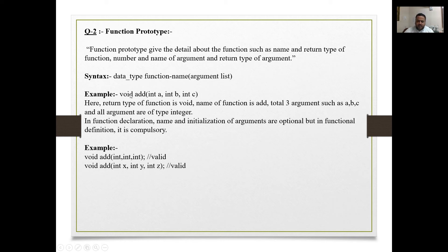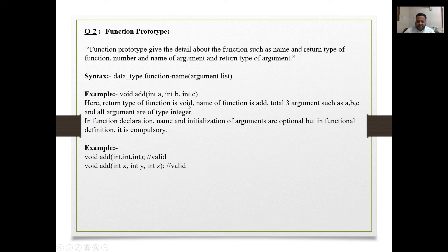The syntax is: data type, then function name, then the argument list. For example: data type void (or int), function name 'add', then argument list: integer a, integer b, integer c — so we have three arguments here.